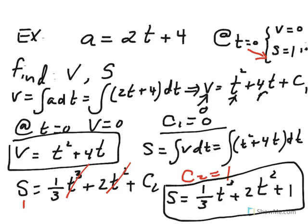So what we did: by integrating acceleration we got velocity, used the initial condition to find the constant of integration, then integrated velocity to find position. We started with a linear function for acceleration, integrated to get a quadratic velocity, and then integrated that to get a cubic position function. The power increases by one with each integration.